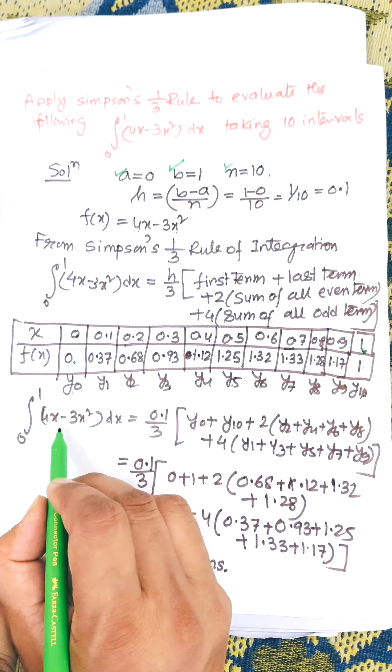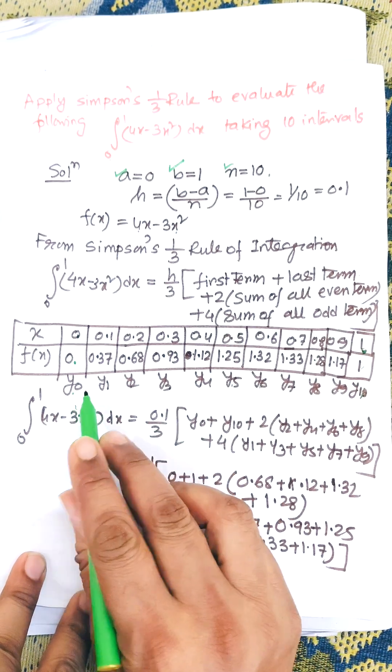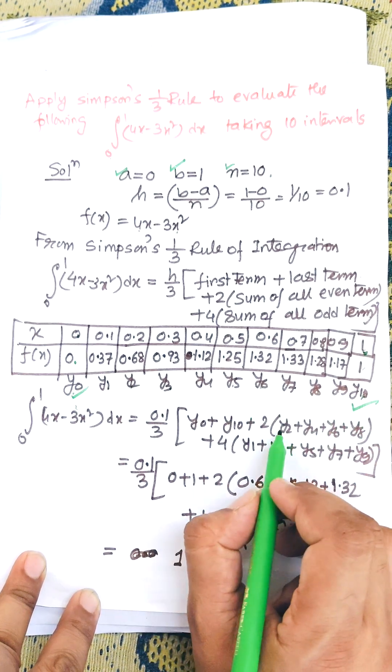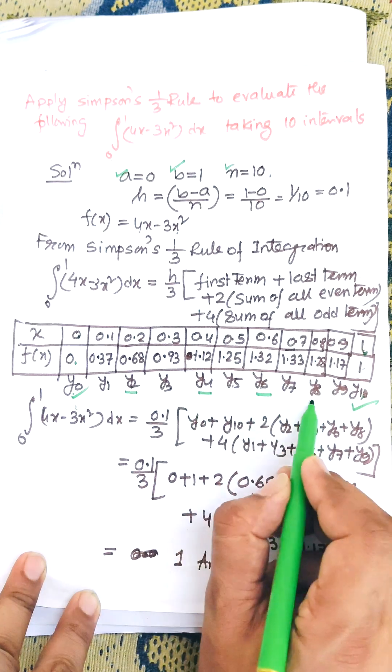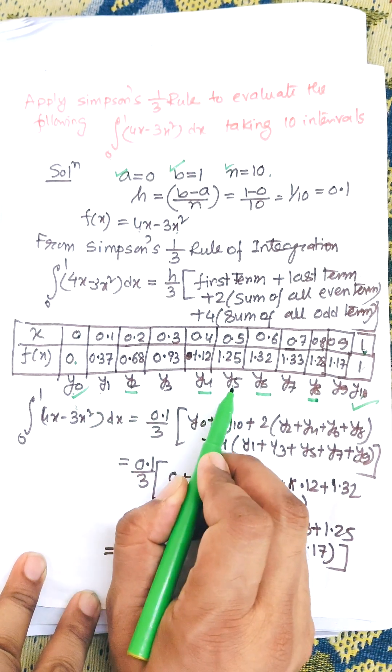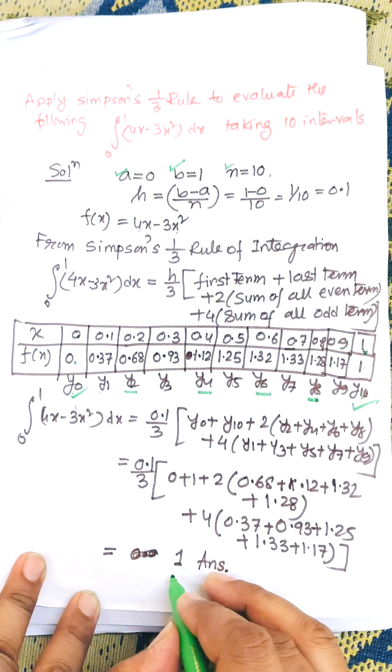Now the integral from 0 to 1 of 4x minus 3x squared dx equals h by 3 times first term y0 plus last term y10, plus two times the even terms, that's y2, y4, y6, y8, plus four times the odd terms, y1, y3, y5, y7, y9. Putting all the values we will get 1.